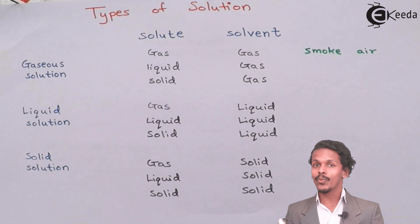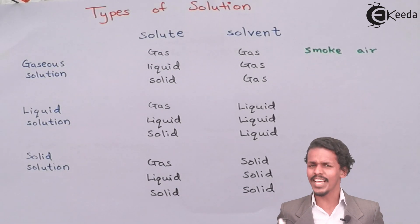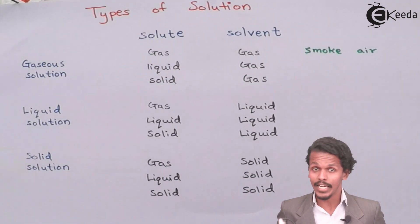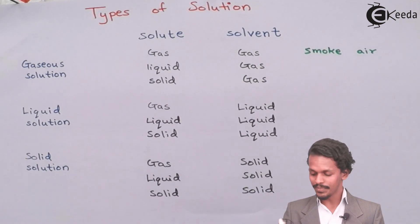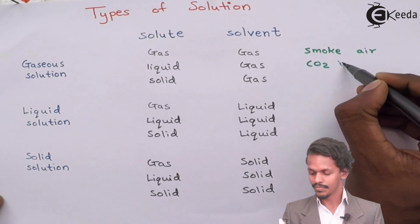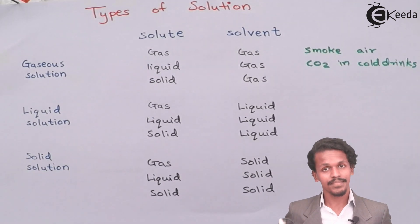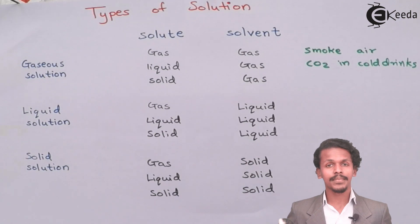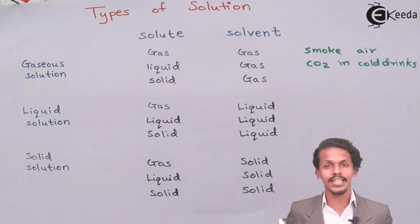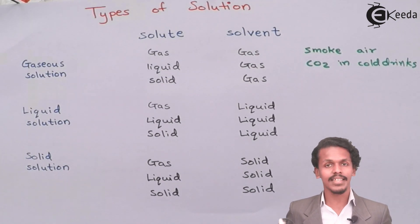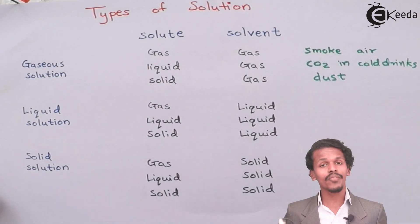The next type is gas in liquid. As we know, cold drinks contain carbonated water, and that carbonated water consists of carbon dioxide — CO2 is purposely dissolved in the coke. For solid in gas, an example is dust particles, which are in a solid state but mixed with gas and cannot be differentiated.